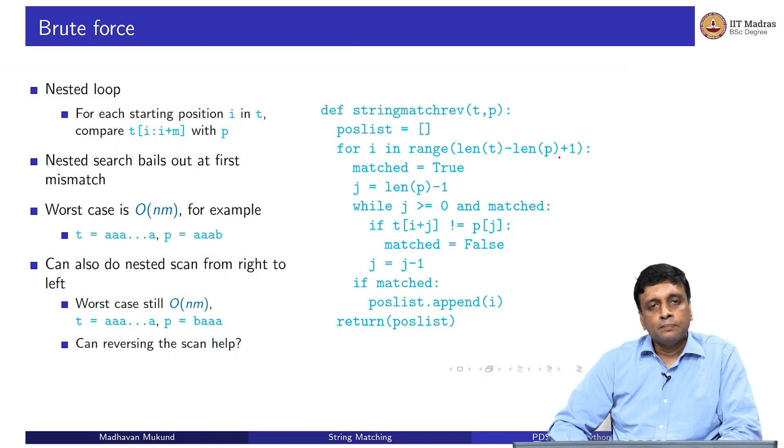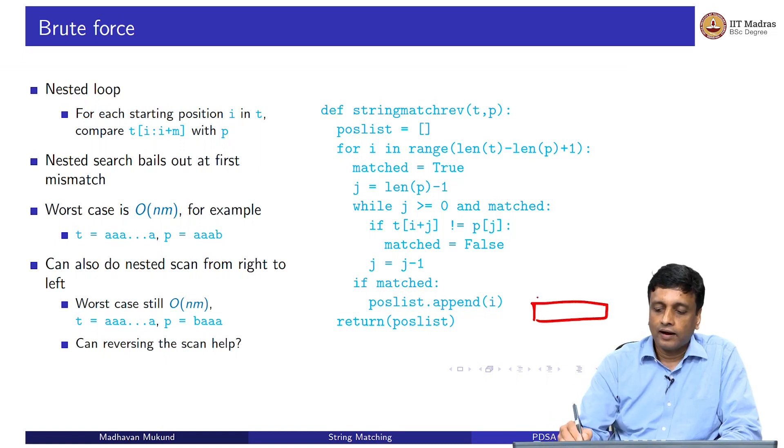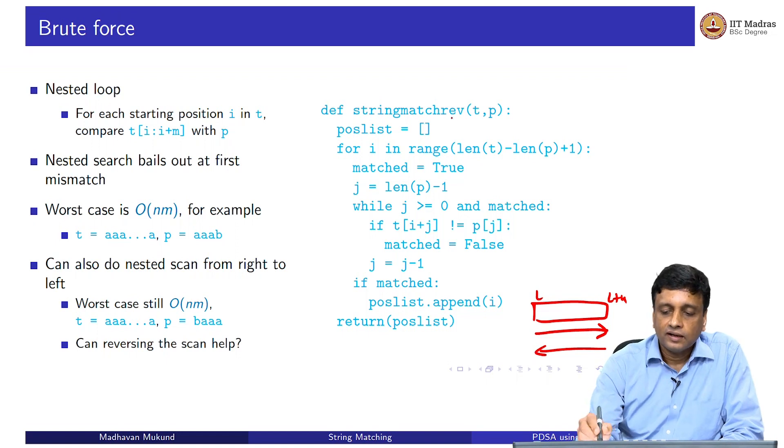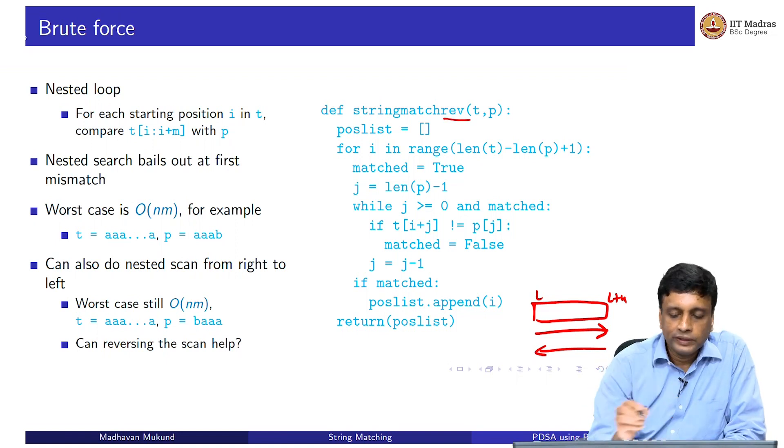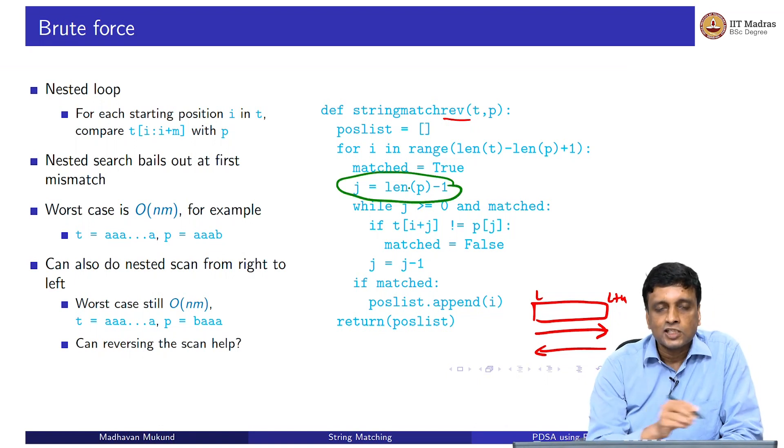We can do a simple modification of this, which is also brute force, but the only thing is that instead of when we scan the slice I to I plus M, we were scanning it from I to I plus M, we could also scan it in reverse. This is a reverse string match. The only difference comes here. We initialize J to be the last position in the slice, and we go backwards.